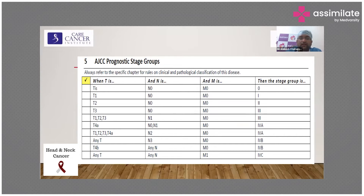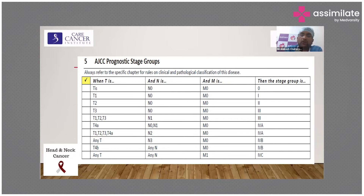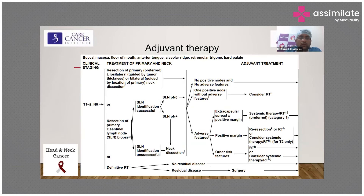The AJCC has classified the stages such that Stage 1 and Stage 2 do not require any adjuvant therapy after surgery. Stage 3 to 4a — we do surgery followed by radiation alone. Stage 4b will require adjuvant therapy in the form of chemotherapy along with radiation. The duration, number of cycles, and fractions of radiation will all depend upon patient characteristics, tolerance, and disease status.